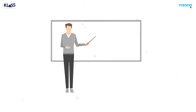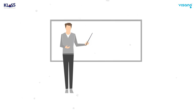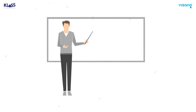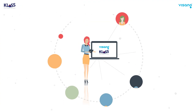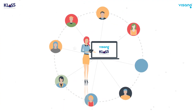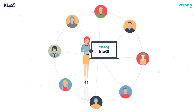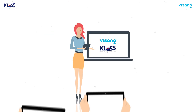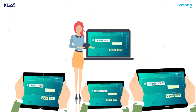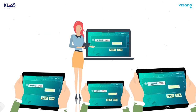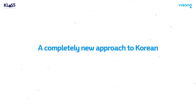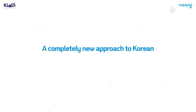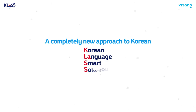Vsang Education is initiating a new platform for Korean language education, implemented through two-way classes in which everyone communicates, instead of the frustrating one-way classes where students only sat silently. CLASS is a completely new approach to Korean language class — the Korean language smart solution CLASS.